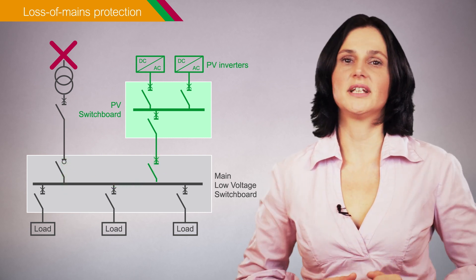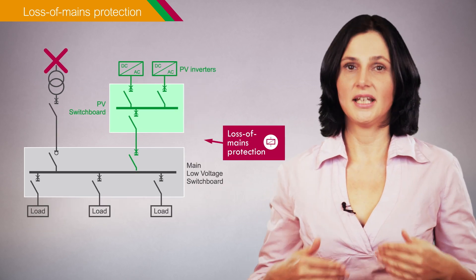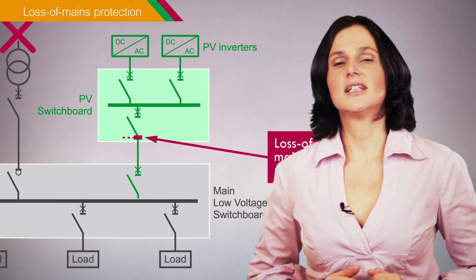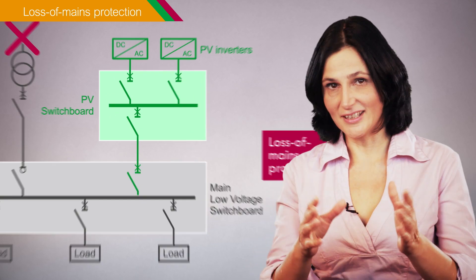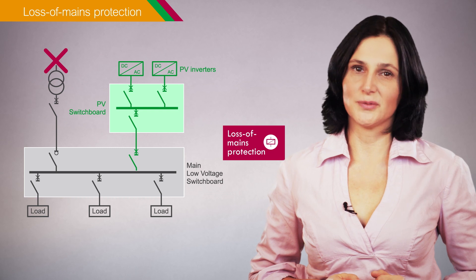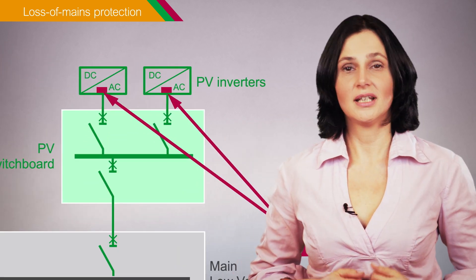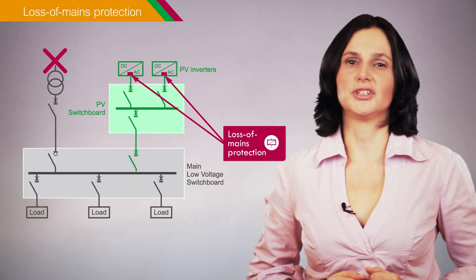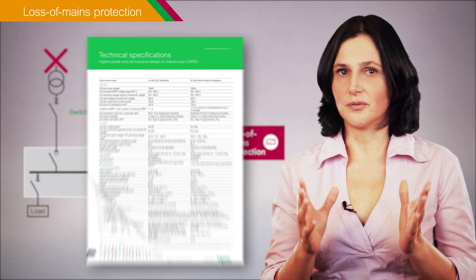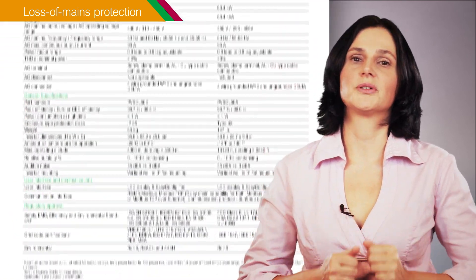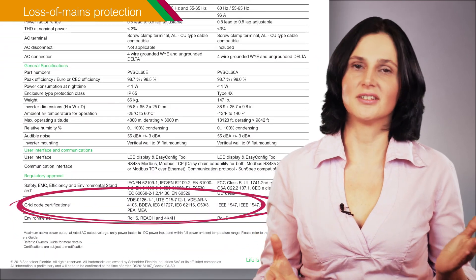Loss of mains protection can be implemented by a dedicated protection device, generally located at the photovoltaic system feeder. Another option is to use grid-type photovoltaic inverters with integrated loss of mains protection, if accepted by the energy distributor. Check the solar inverter datasheet to confirm it includes loss of mains protection and to verify appropriate standards compliance.